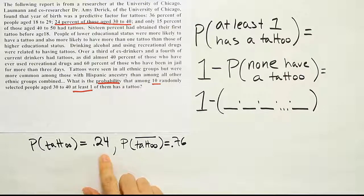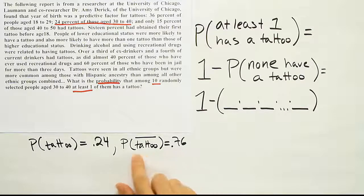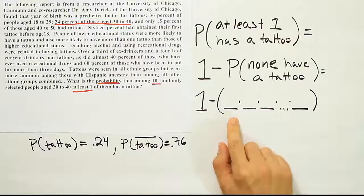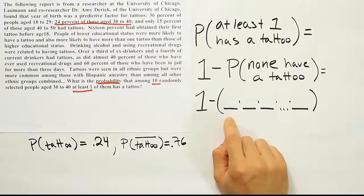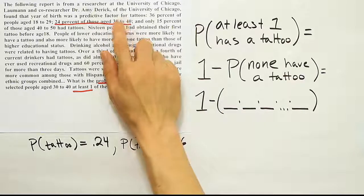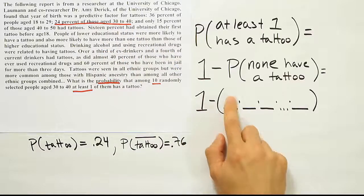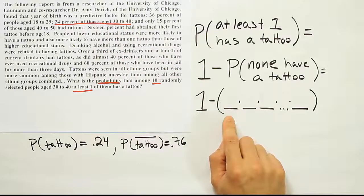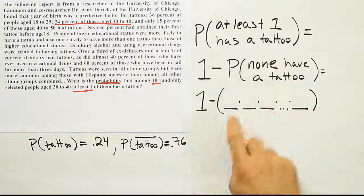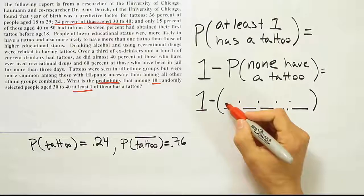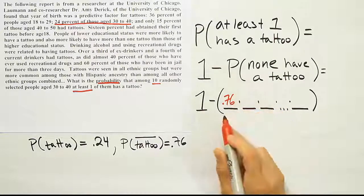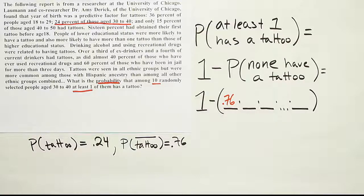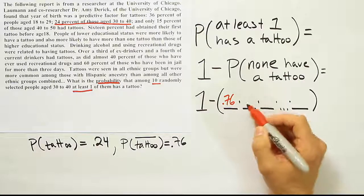And that's the leftovers. So if 24% have tattoos, 76% do not have tattoos. We need to put that probability here because this is the probability that the first person we take from this age bracket does not have a tattoo, because we want none of them to have a tattoo. So we need to put that number in there. So we're going to put 0.76 here. That's the probability that the first person in that group doesn't have a tattoo. But we want none of them to have tattoos.